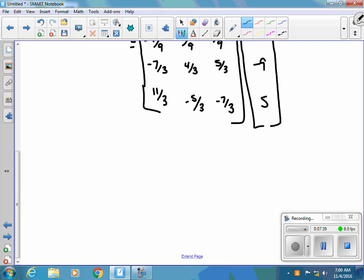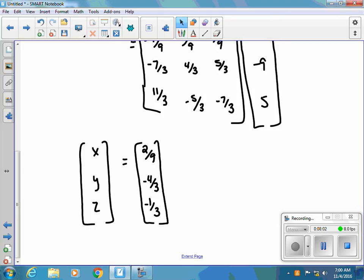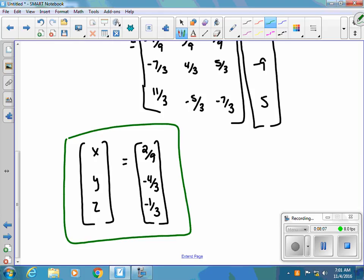So actually once I do that I get a final answer here for my x y z and I get 2 ninths negative 4 thirds negative 1 third. So that tells me then that x equals 2 ninths in the system, y equals negative 4 thirds and z equals negative 1 third.